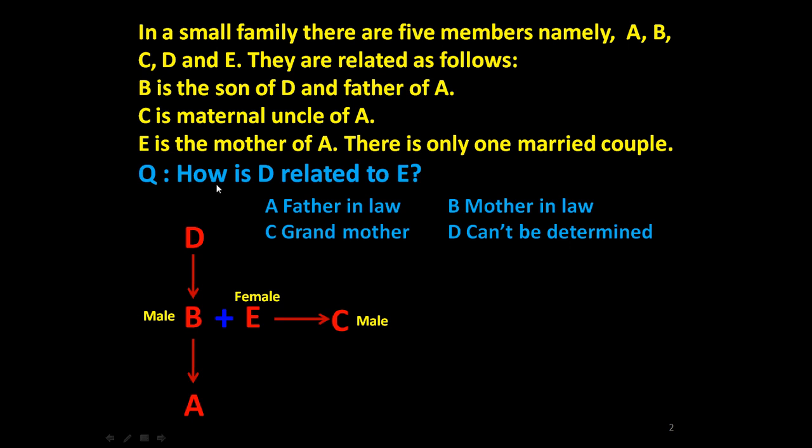Now we can answer this question. How is D related to E? D is here. It is not clear whether D is a male member or female member. So either D will be father-in-law or mother-in-law of E. But because we don't know whether he is male or female, the answer will be cannot be determined.